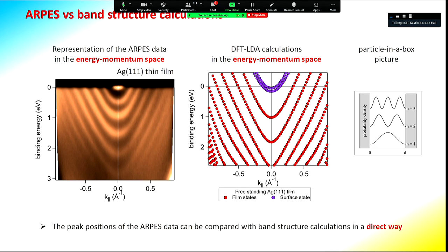The band structure, in the case of simple two-dimensional systems, can be very easily compared to DFT calculations. For example, silver thin films show an electronic band structure analogous to the particle-in-a-box picture — a number of quantum well states in thin films due to electron confinement. ARPES can nicely show very similar parabolic-like states, and their form is also very similar to what DFT calculations predict.